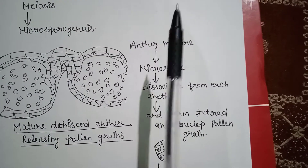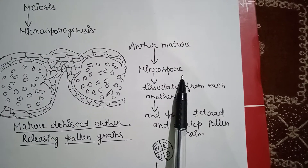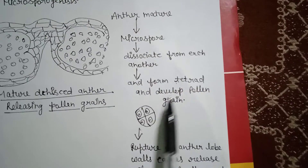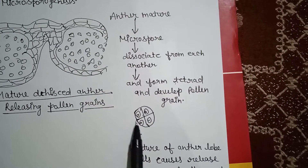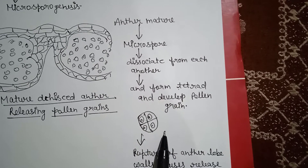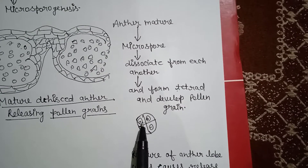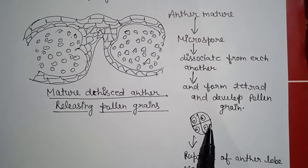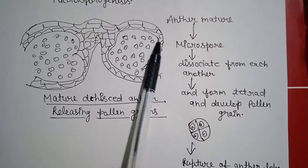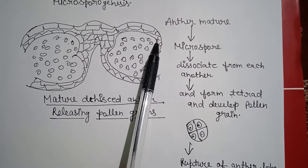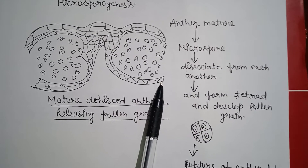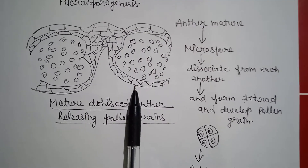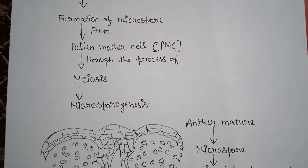When the anther lobe is ruptured, many pollen grains are released. The microspores were different from each other, and a tetrad is formed. Why do you call it tetrad? Tetrad means four — four chambers are present, so it is called tetrad. When the anther lobe is ruptured, several thousand pollen grains are released at a time. So this process is called microsporogenesis.